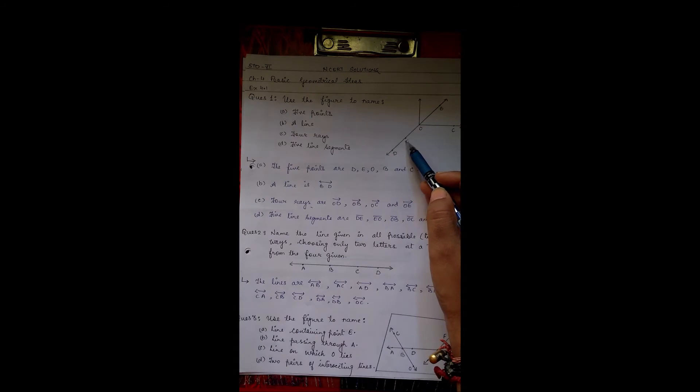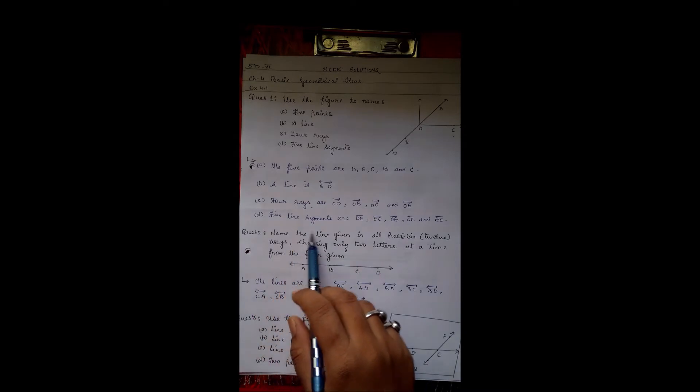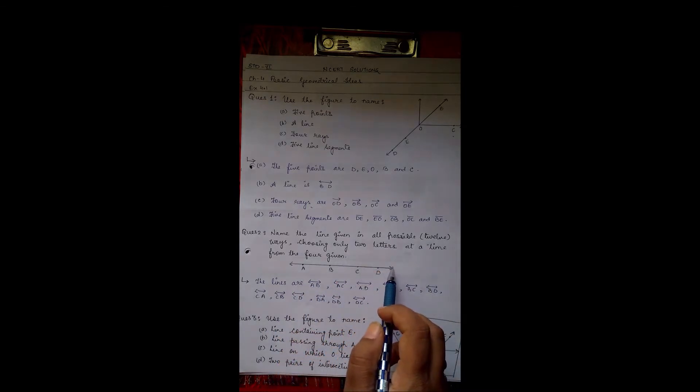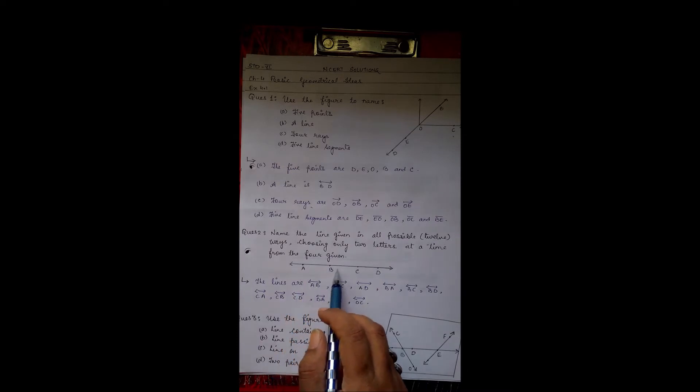Second question: name the line given in all possible 12 ways, choosing only two letters at a time from the four given. This is the line segment given. Four points are given: A, B, C, D. We have to find the 12 lines. So line AB, line AC, line AD, then BA, BC, then line BD, then line CA, CB, CD, then line DA, DB, DC. These are the 12 possible ways in which the lines can be named.